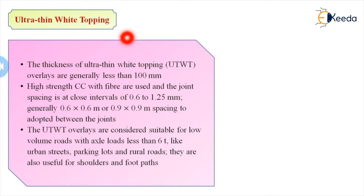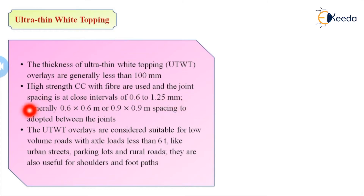The last type is ultra thin white topping (UTWT). The thickness of UTWT overlays is generally less than 100 mm. High strength concrete or CC with fibers is used, and joint spacing is as close as 0.6 to 1.25 meters — generally 0.6 by 0.6 or 0.9 by 0.9 meter spacing. UTWT overlays are considered suitable for low volume roads with axle loads less than 60 kN, like urban streets, parking lots, rural roads, shoulders, and footpaths.